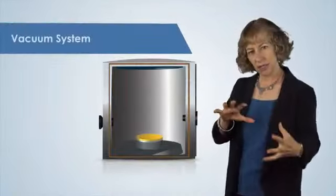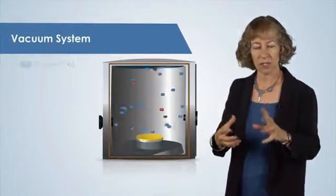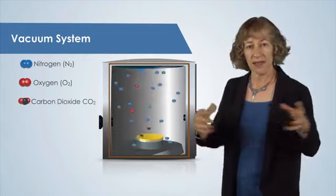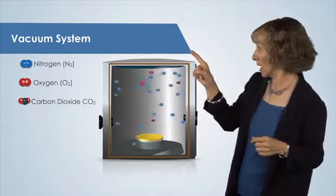Let's think about a sealed chamber for a minute. The air inside is made up of different types of molecules, such as nitrogen, oxygen, and carbon dioxide. These air molecules are moving and bouncing around inside the chamber, as we see here.